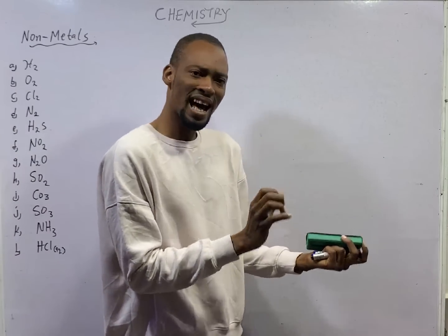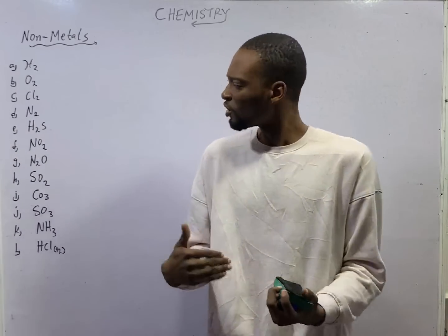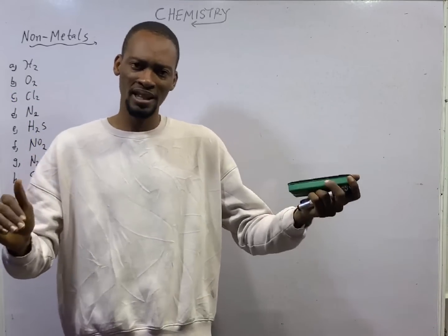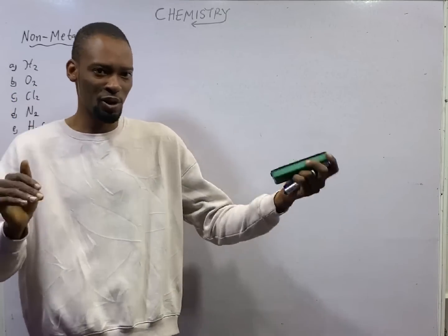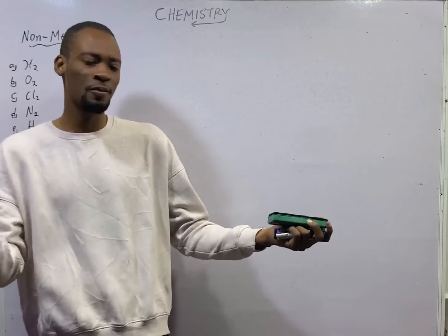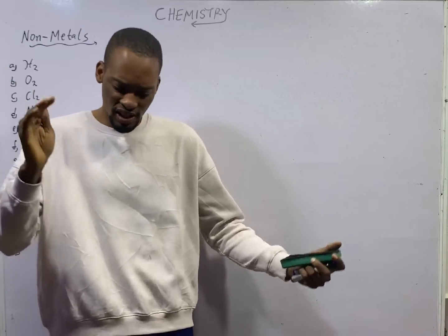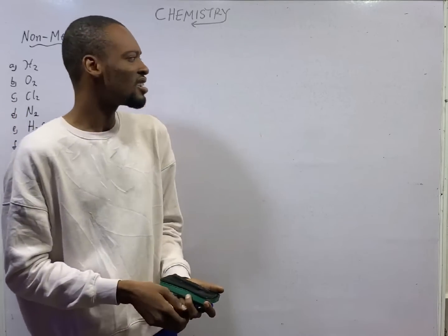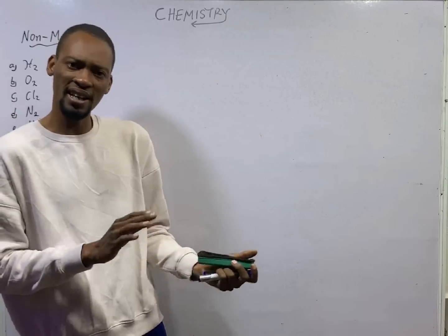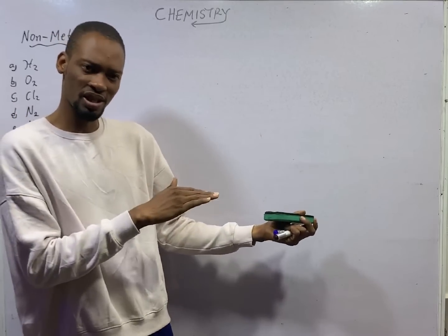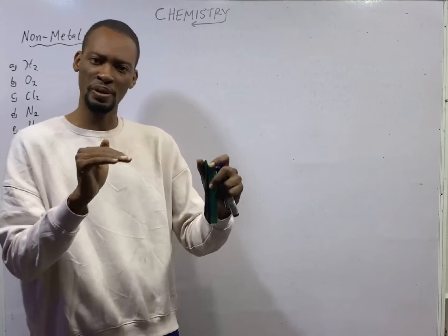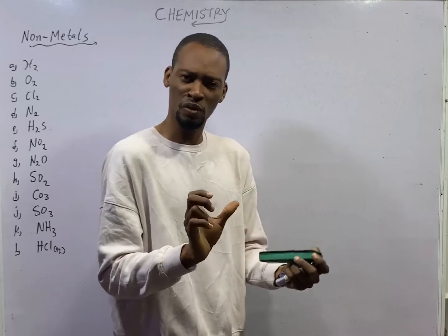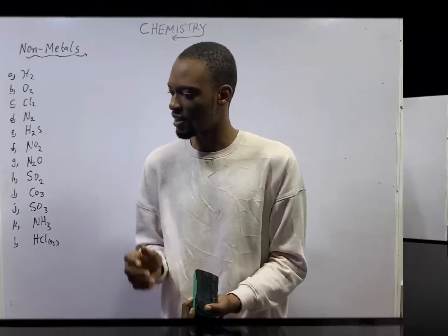Metals are elements that ionize by electron loss. Semi-metals, or semi-conductors, or metalloids, have properties in between that of metals and non-metals — that shall be treated under electronics and has already been treated in periodic training. Now, the concern of today: non-metals.